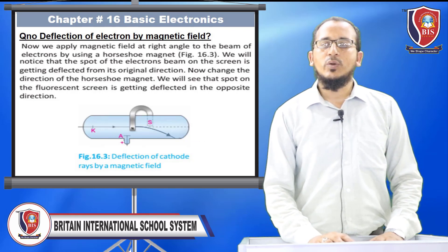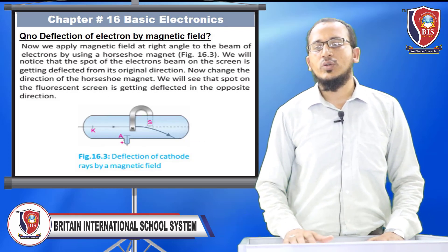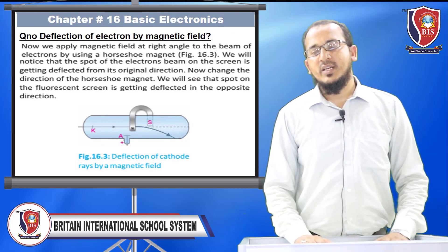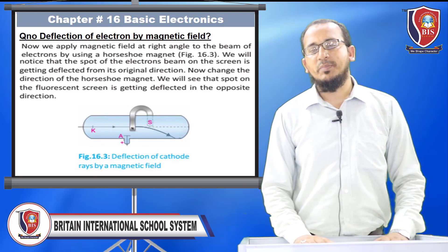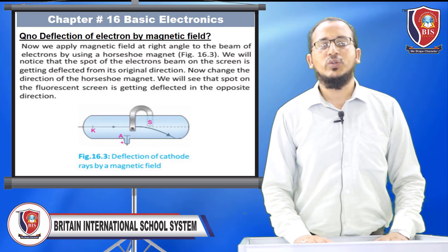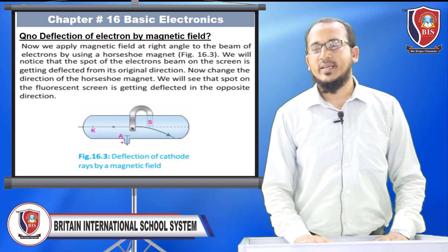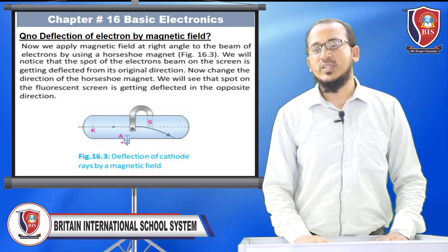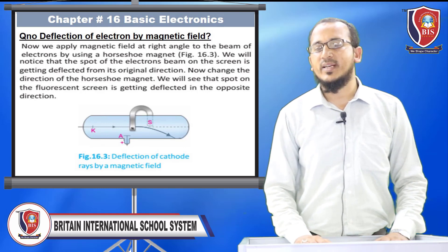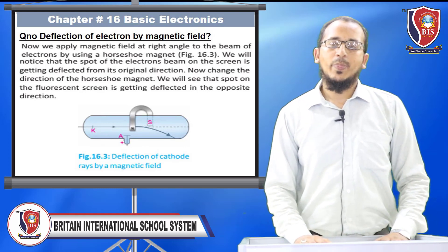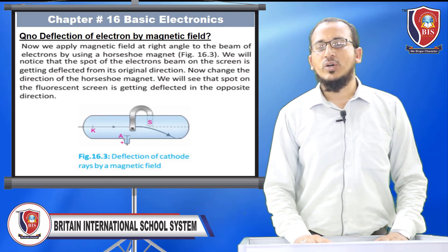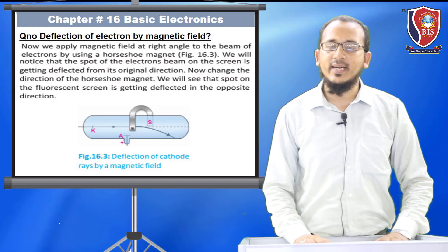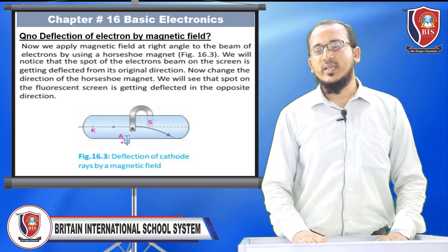Question number 16.2 — deflection of electron by magnetic field. We apply the magnetic field at right angles to the beam of electrons using a horseshoe magnet. We notice that the spot on the screen is deflected from its original direction. When we change the direction of the horseshoe magnet, the spot on the fluorescent screen is deflected in the opposite direction.